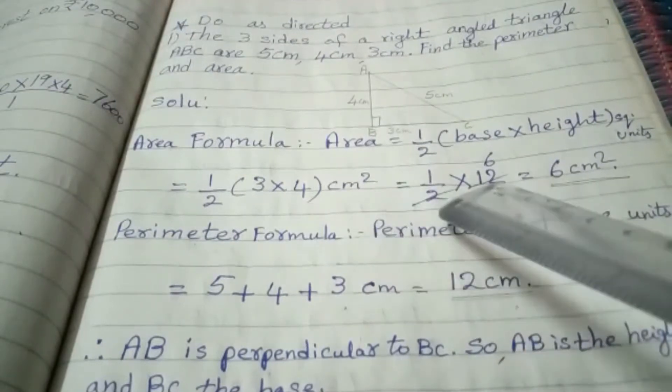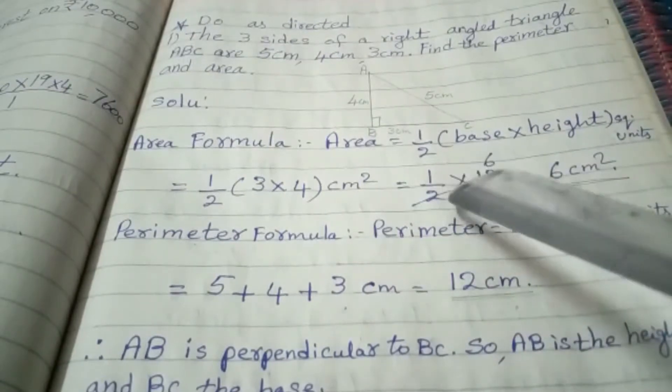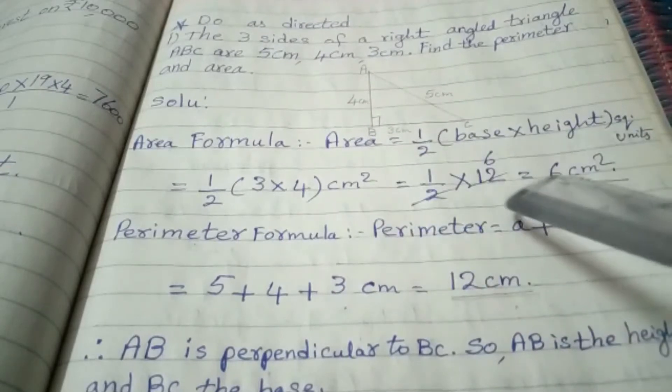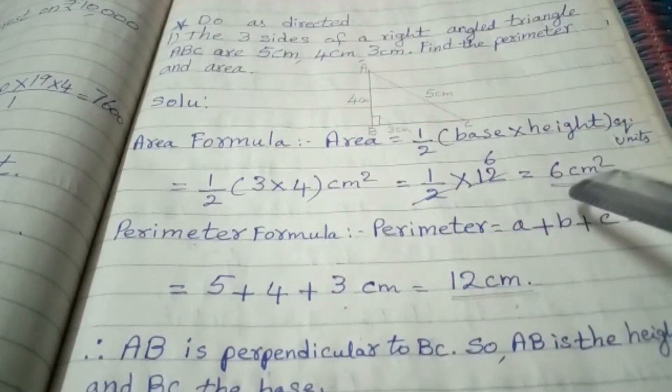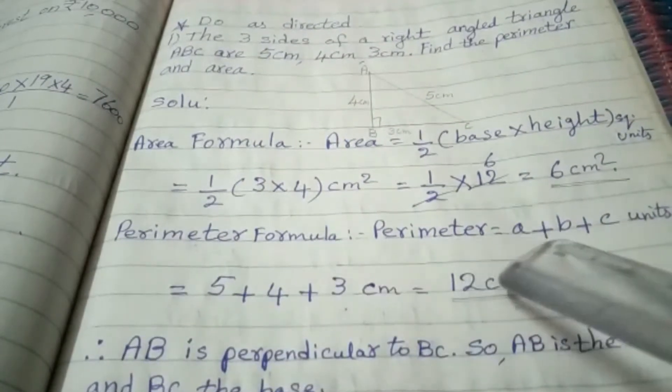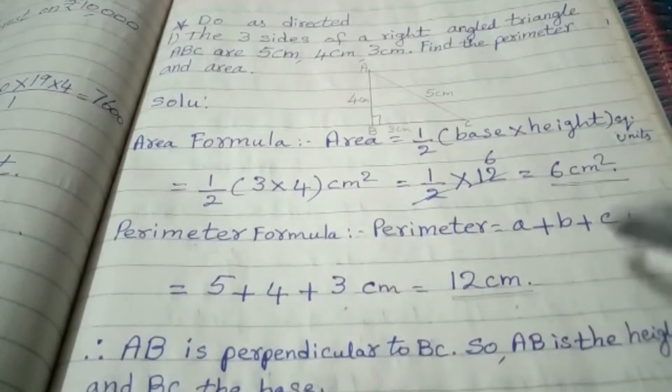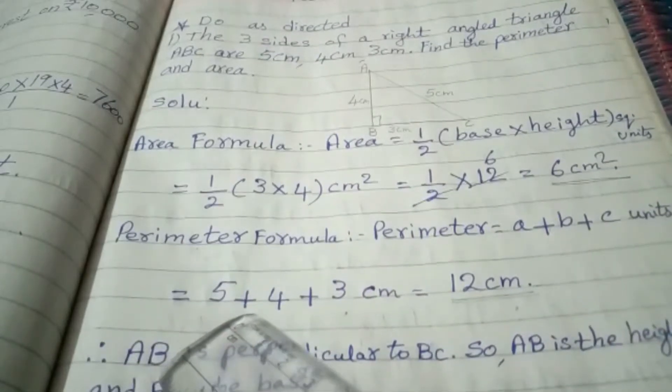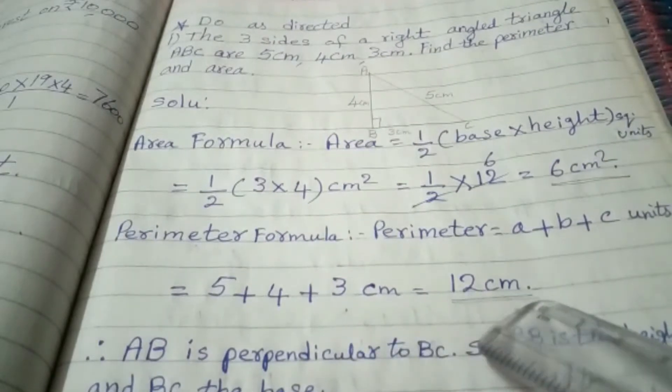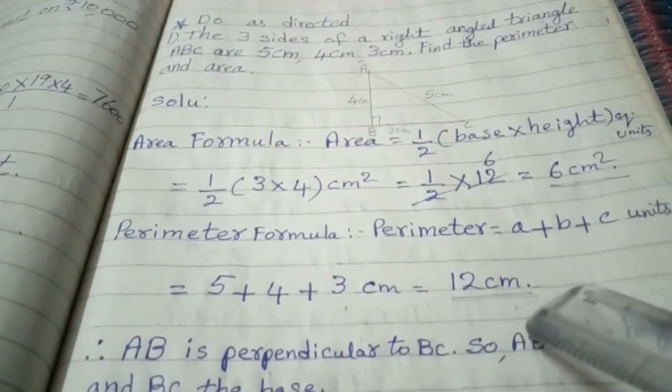So cancel 2, cancel 12, and in the top write 6 and 1 times 6 is 6. So the answer is 6 square centimeters for area. Now perimeter formula: Perimeter is equal to A plus B plus C units, that is equal to 5 plus 4 plus 3 centimeters, that is equal to 12 centimeters is the perimeter.